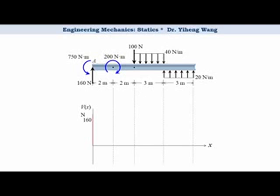For the next 4 meters there is no change in force, so the load intensity is 0 — we have a horizontal line with slope of 0. Then there is a concentrated load of 100 N downwards, giving another step change of 100 N. For the next 3 meters, there is a downward distributed load with intensity of 40 N per meter, which corresponds to a decreasing line with slope of negative 40. For the last 3 meters, there is an upward distributed load with intensity of 20 N per meter, which corresponds to an increasing line with slope of positive 20, returning the curve back to 0. This completes the shear force diagram.